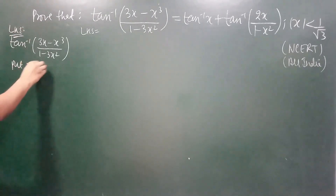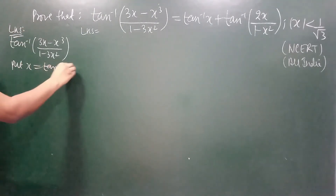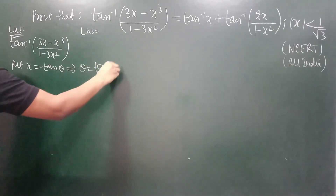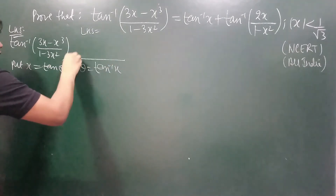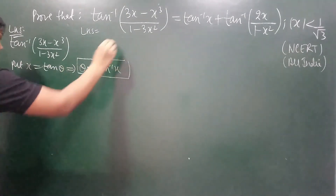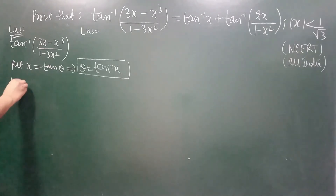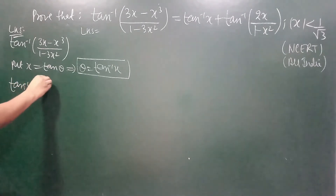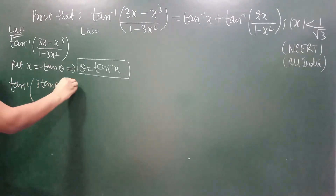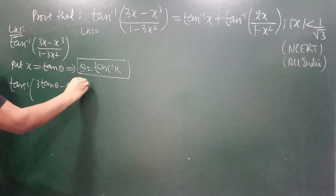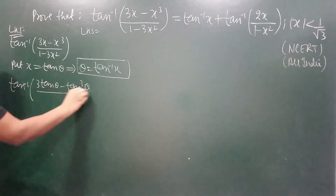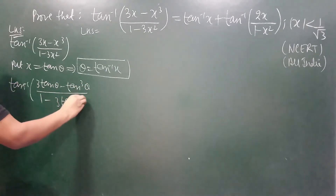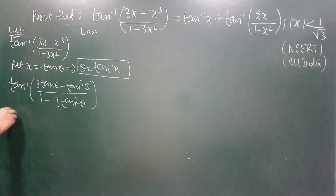After putting x equal to tan theta, theta becomes equal to tan inverse x — this will be useful later. So our LHS becomes tan inverse of (3 tan theta minus tan cube theta) upon (1 minus 3 tan square theta).